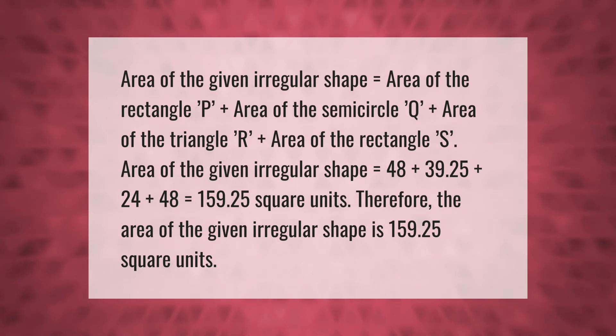Area of the given irregular shape = 48 + 39.25 + 24 + 48 = 159.25 square units. Therefore, the area of the given irregular shape is 159.25 square units.